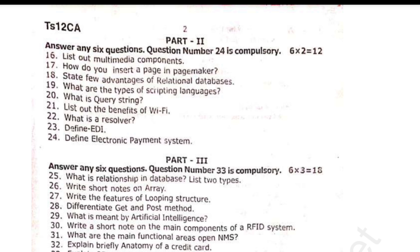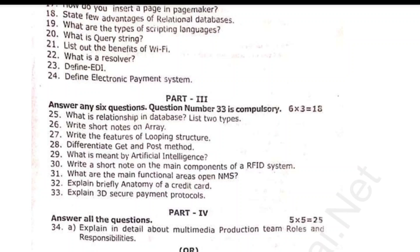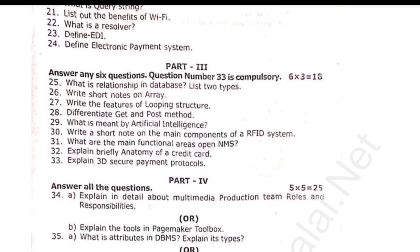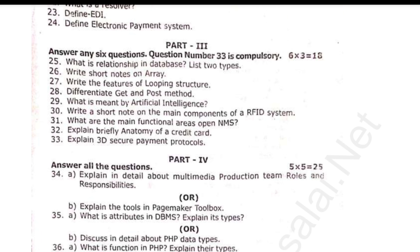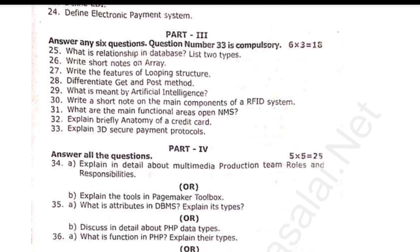The next one is 5 marks, Part 5 — 25 marks total. Question 34: explain in detail about multimedia protection, team roles and responsibilities; or explain the tools in PageMaker toolbox. Question 35: what are attributes in DBMS, explain its types; or discuss in detail about PHP data types. Question 36: what is a function in PHP, explain data types; or discuss in detail about the switch statement.